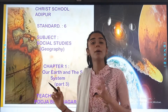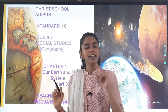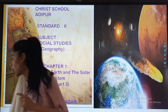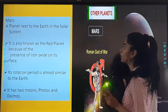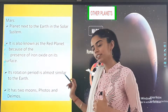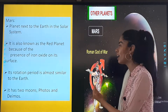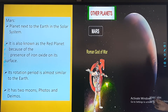We were studying about the planets, and we had already discussed about Earth, Mercury, and Venus. Now let's start with Mars. You can look at the picture.